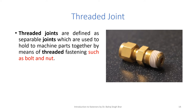Detachable or temporary joints — first is the threaded joint. Threaded joints are defined as separable joints used to hold two machine parts together by means of threaded fastenings such as a bolt and nut. A threaded joint is shown in the figure, and we are all well versed with the nut and bolt assembly used to join different parts in everyday life.